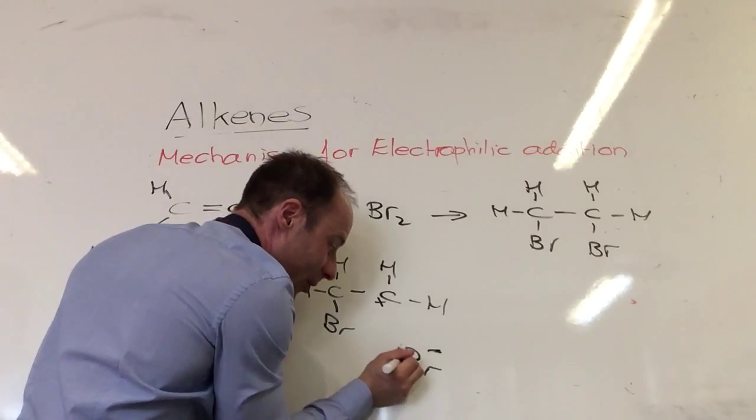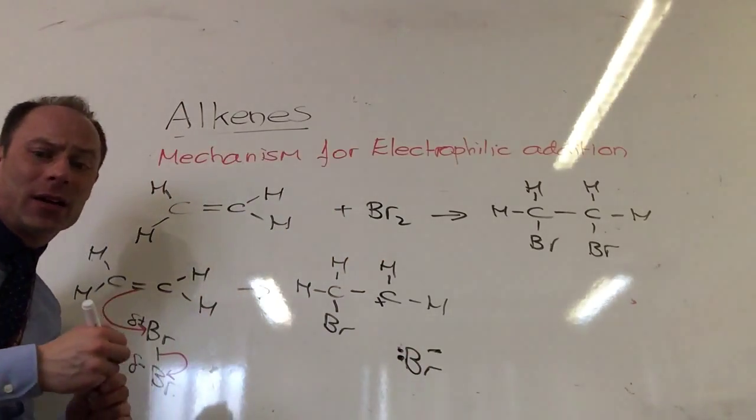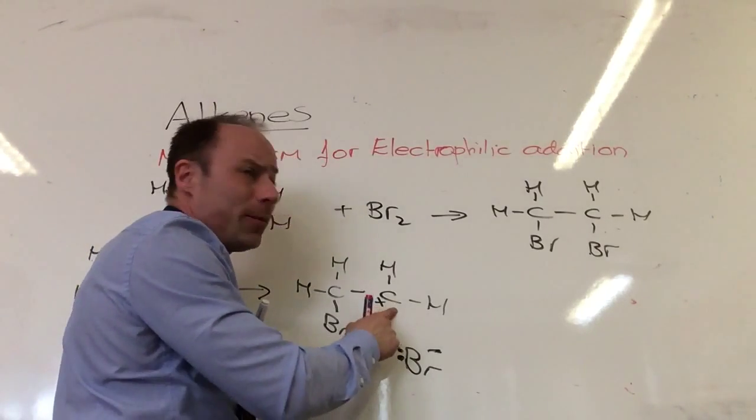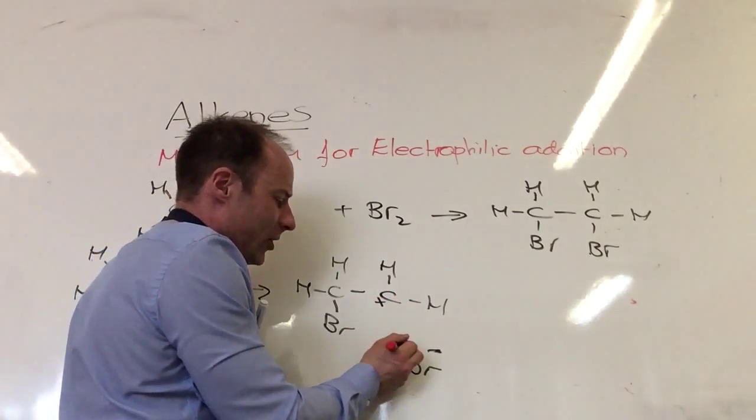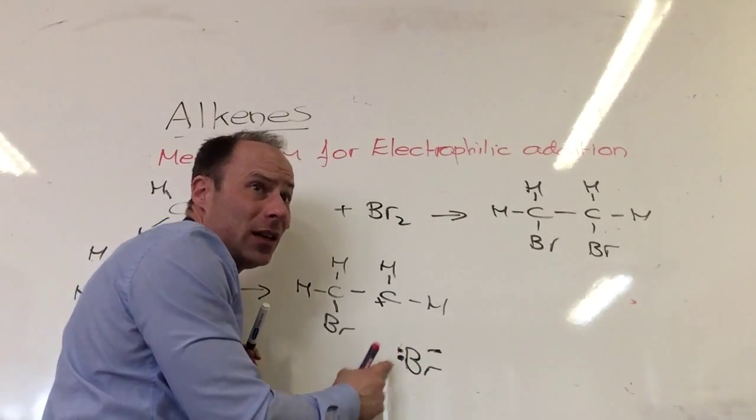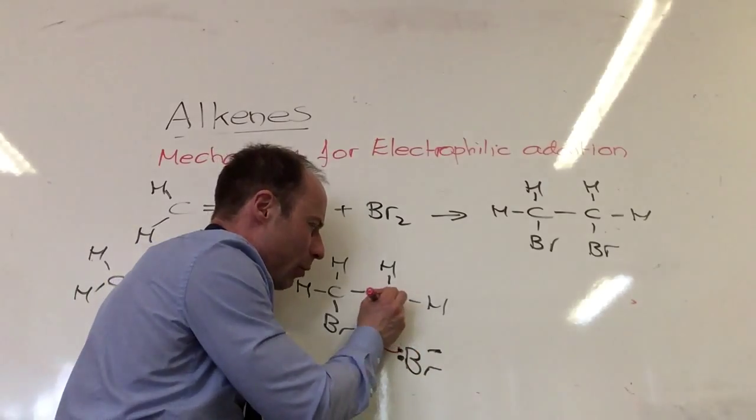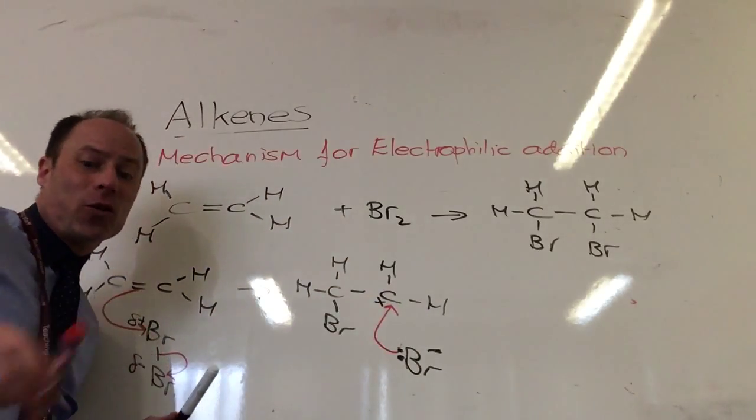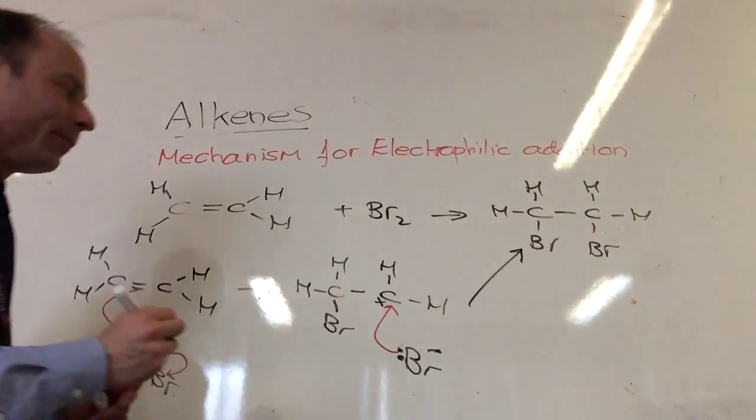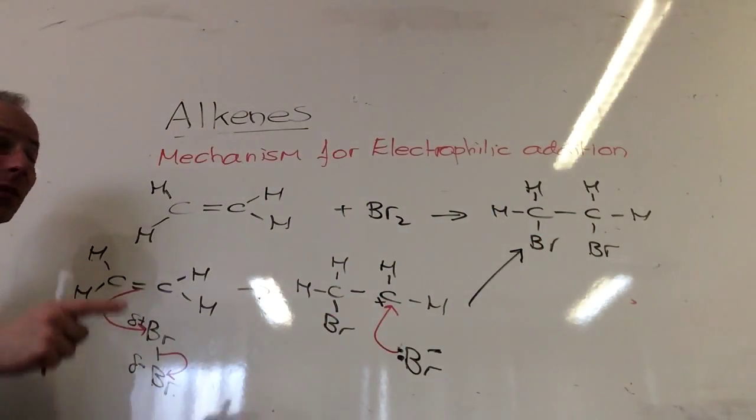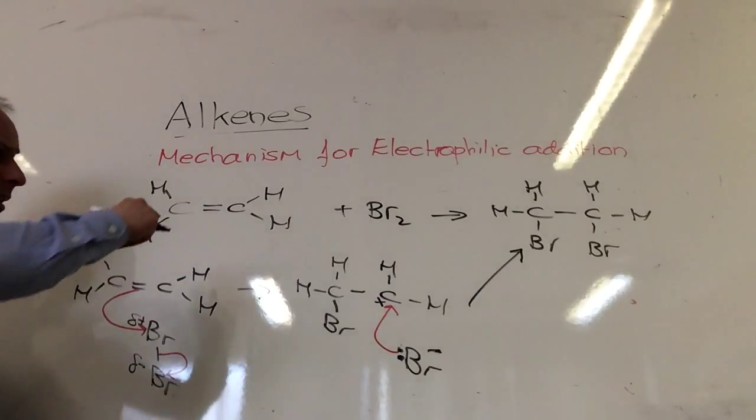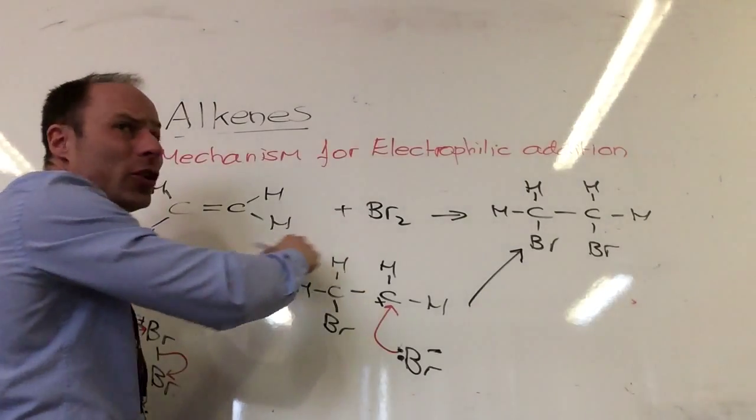So what do you think is going to be the next step? Those two dots show a lone pair. The final step: I've got a negative bromide and a positive carbon. These two are going to get together. This isn't showing the movement of an atom, this is showing the movement of electrons, and they form a bond there to give me my product. So that is a mechanism. It's called electrophilic addition. Addition because I'm adding a molecule across a double bond.